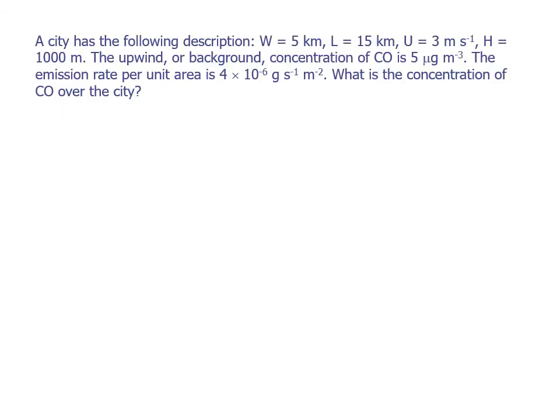And we can see this applied in this example problem. A city has the following description: width is 5 kilometers, length is 15 kilometers, wind velocity is 3 meters per second, height is 1,000 meters. The height comes from the mixing depth, there's kind of a lid on the box that mixing happens up to a height of 1,000 meters and doesn't mix much beyond that. That has to do with meteorological conditions. The upwind or background concentration of CO is 5 micrograms per cubic meter, so this is our C_in. The emission rate per unit area is 4 times 10 to the minus 6 grams per second per square meter. What is the concentration of CO over the city?